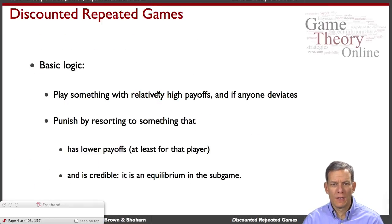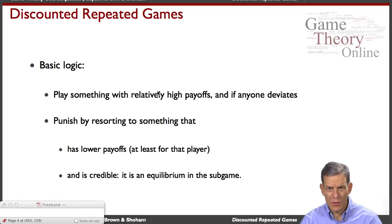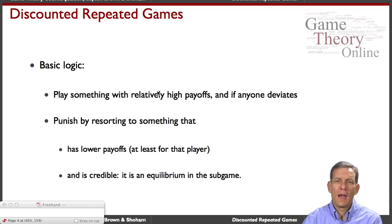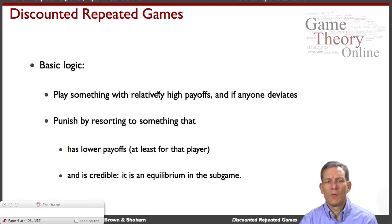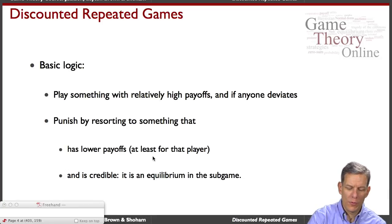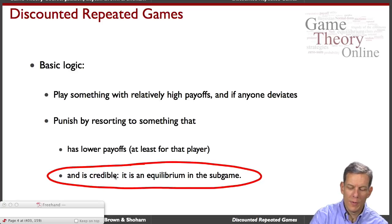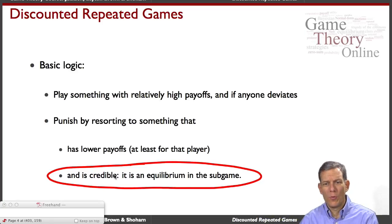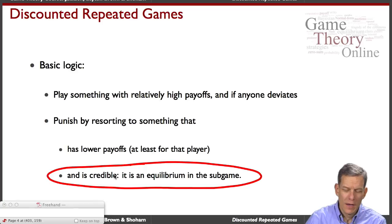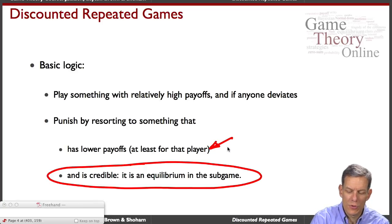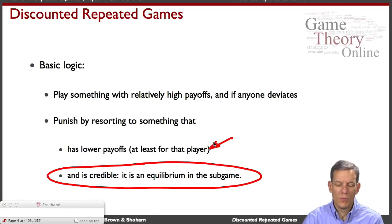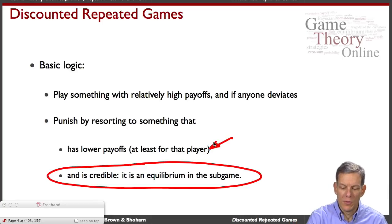The basic logic is: play something with relatively high payoffs — even if it's not an equilibrium of a static game, you can sustain it by having punishments. If anyone deviates, you resort to something with lower payoffs for that player. Crucially, it all has to be credible — it has to be an equilibrium in the subgame going forward. And the lower payoffs in the future must be enough to deter people from deviating in the present.